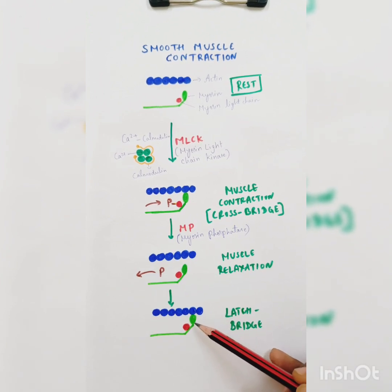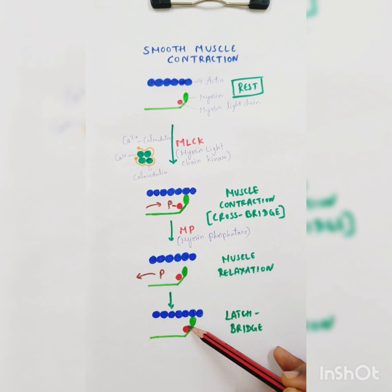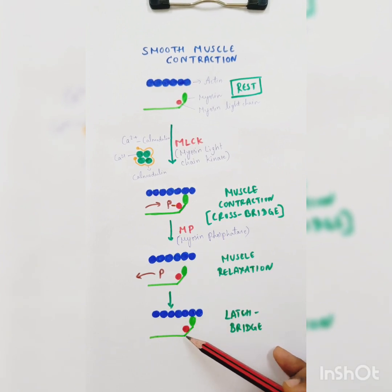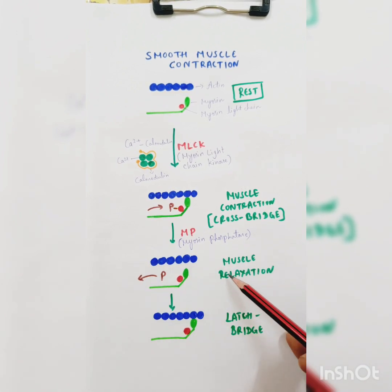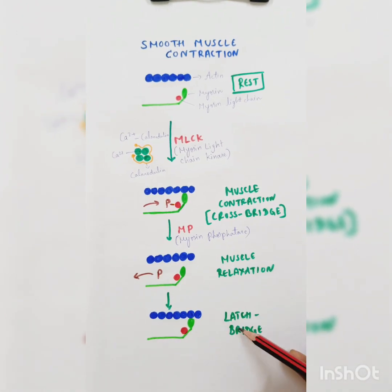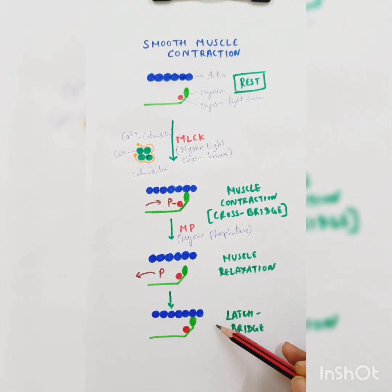That is why this is called latch bridge mechanism, where even in the dephosphorylated state, the myosin molecule is still in the attached position. It is not separated as happens in muscle relaxation. This happens in few smooth muscles in the body, especially in blood vessel smooth muscles.